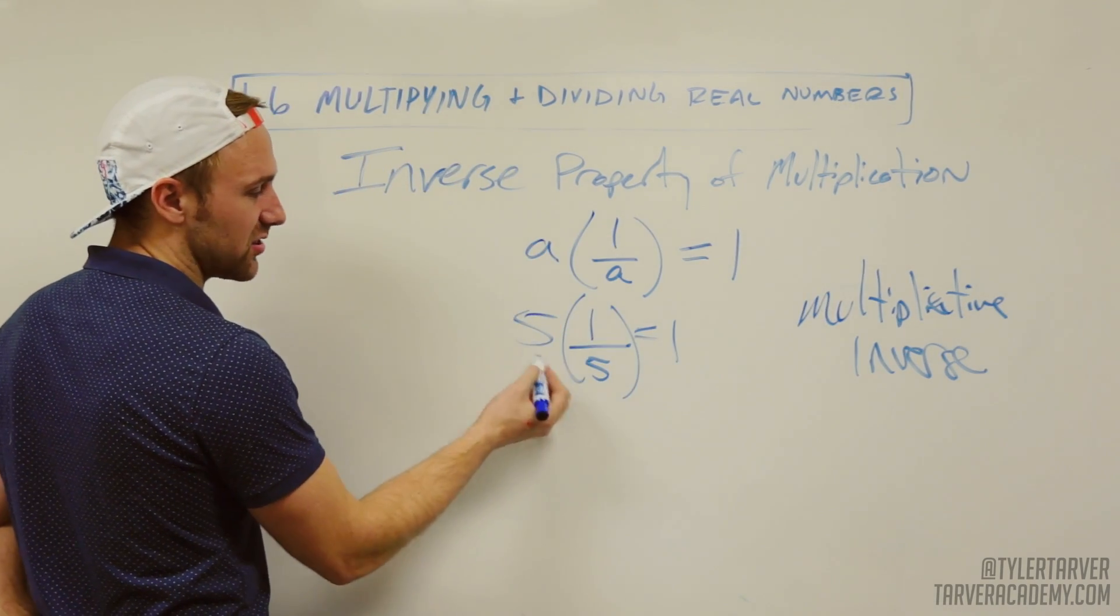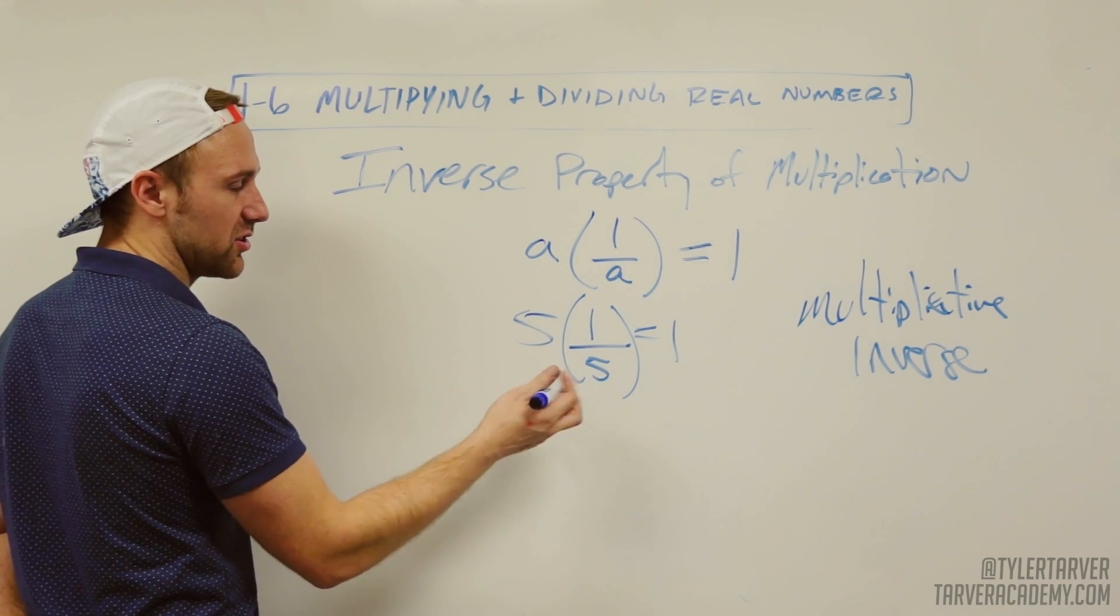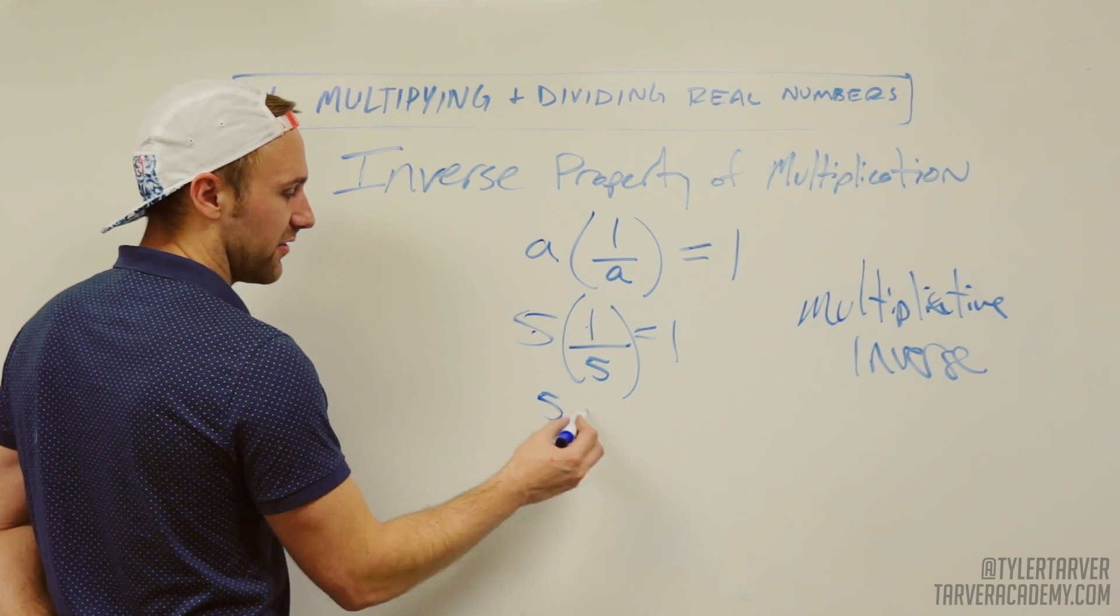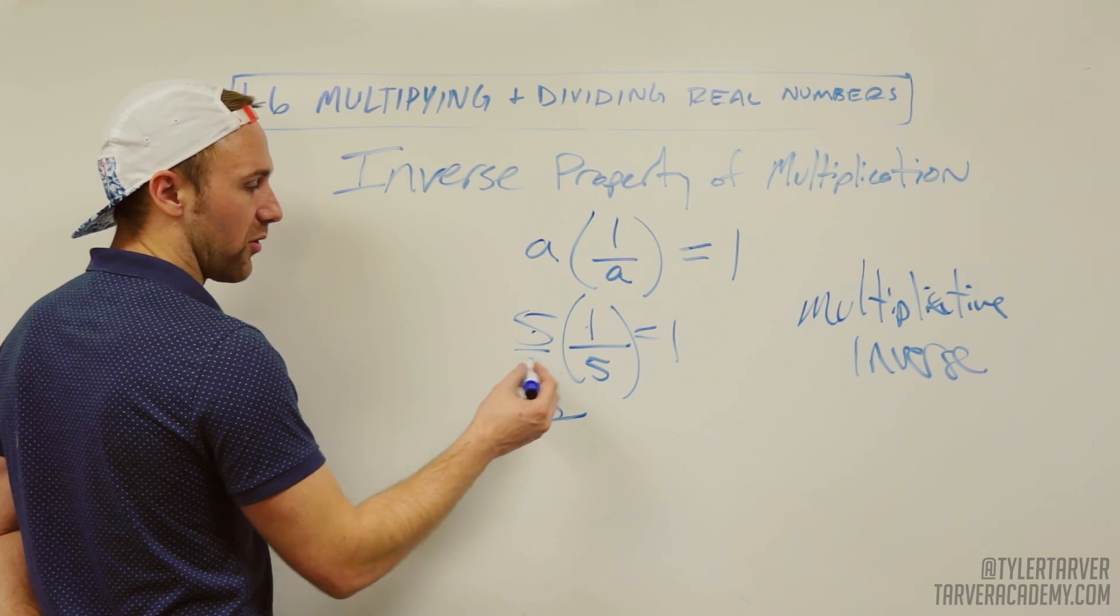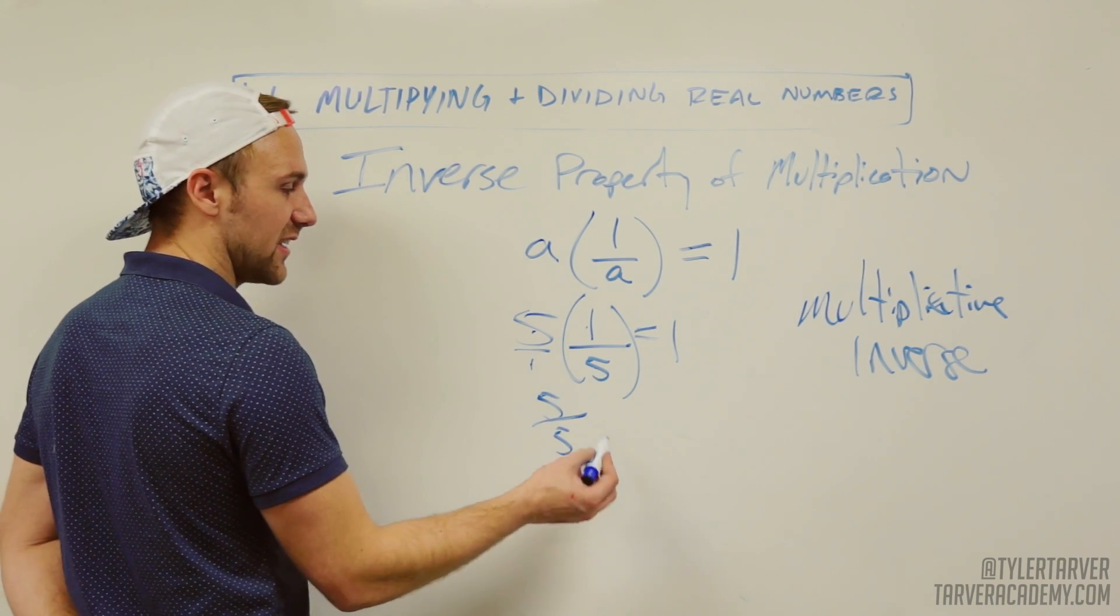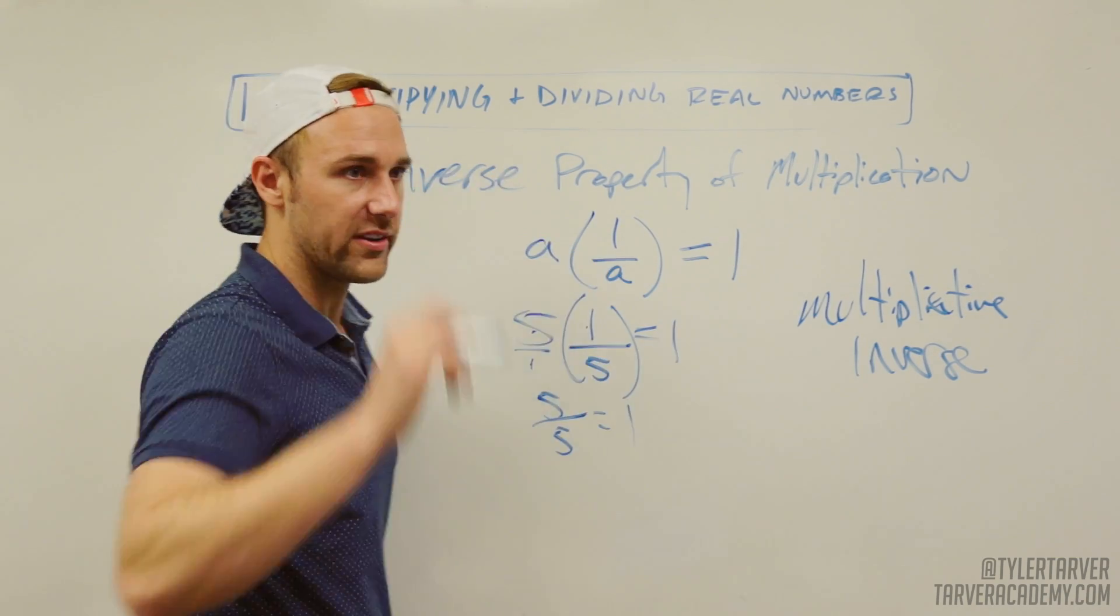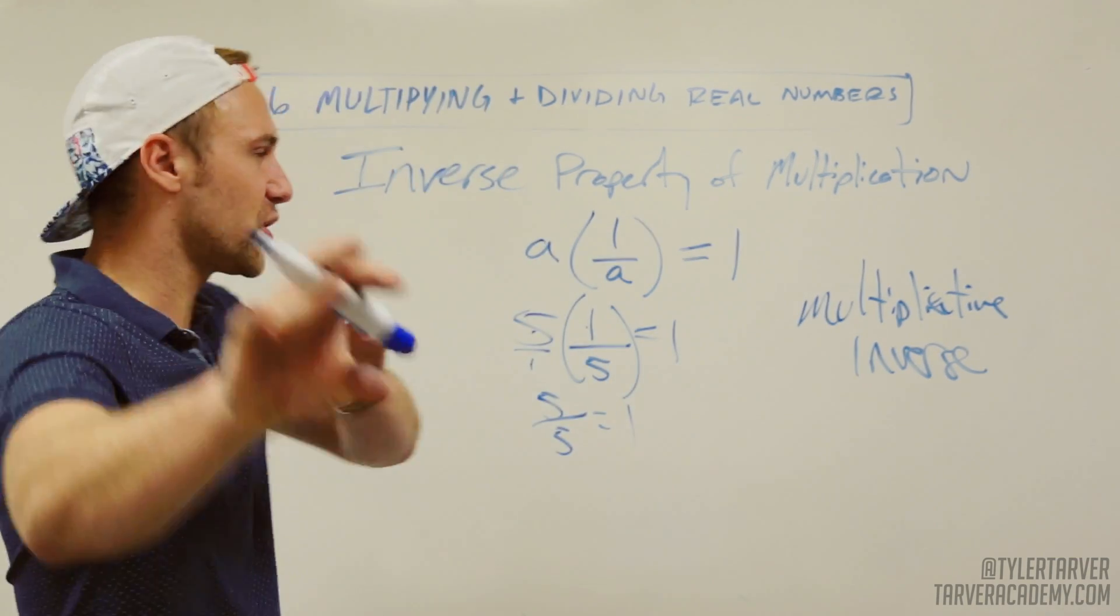When you multiply them, you know this is always over one. If you've got a number, it's always over one. Then you just multiply across. So five times one is five, and then one times five is five. Five divided by itself. How many times does five go into five? One time. So that's the official way.